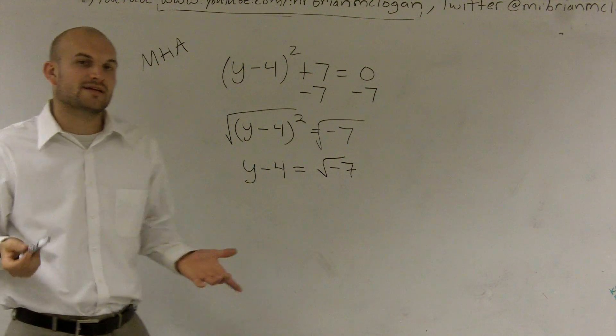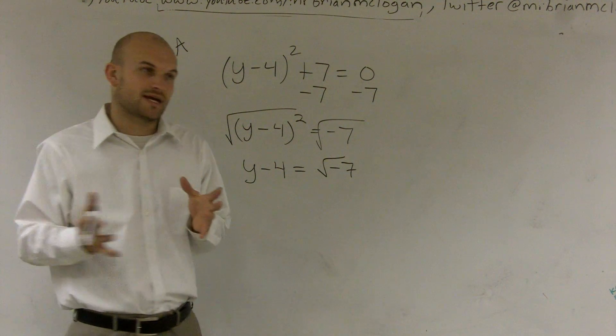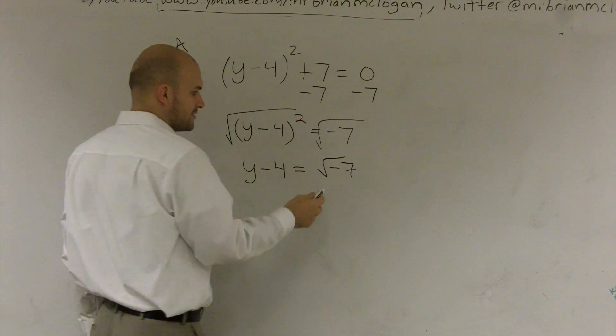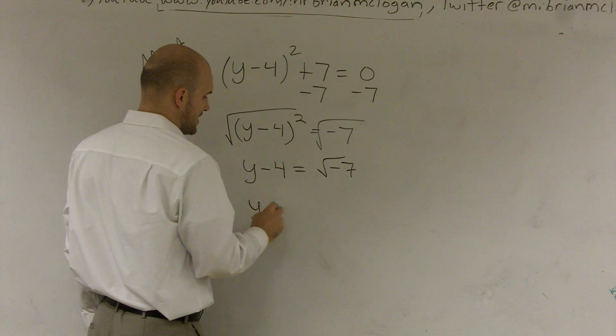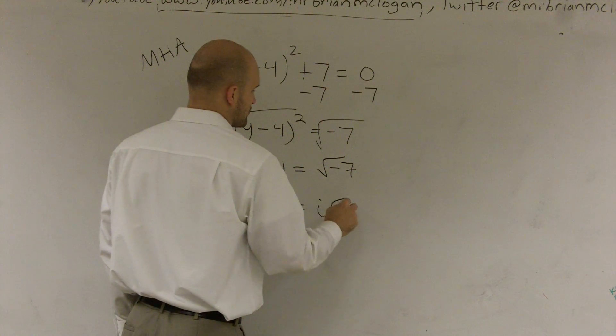Now, we know we can't take the square root of a negative number. There's no number that can multiply by itself to give you a negative number. So therefore, I can rewrite this as y minus 4 equals i square root of 7.